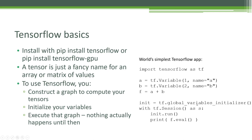Next, we need to initialize those global variables — explicitly telling TensorFlow to put those initial values into the variables. We create an object called init, our global variables initializer, then define a session called S. We run init, which stuffs the values one and two into our A and B variables. Then we call F dot eval — this is where computation finally happens. It creates the graph that takes A containing one and B containing two, adds them together, figures out how to distribute that operation across your cluster, and ultimately prints the result three. We've created the most complicated way imaginable of adding one plus two together.